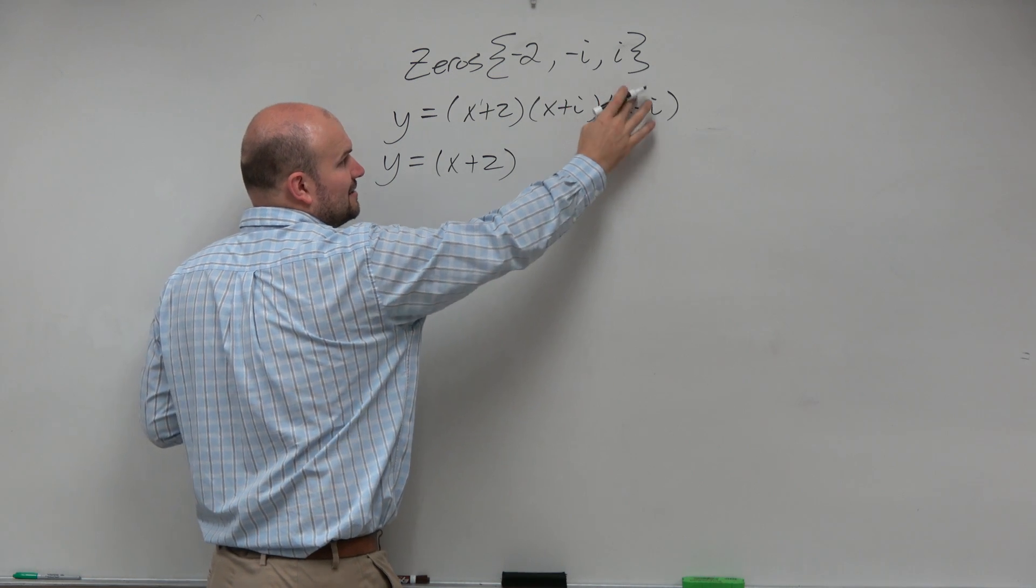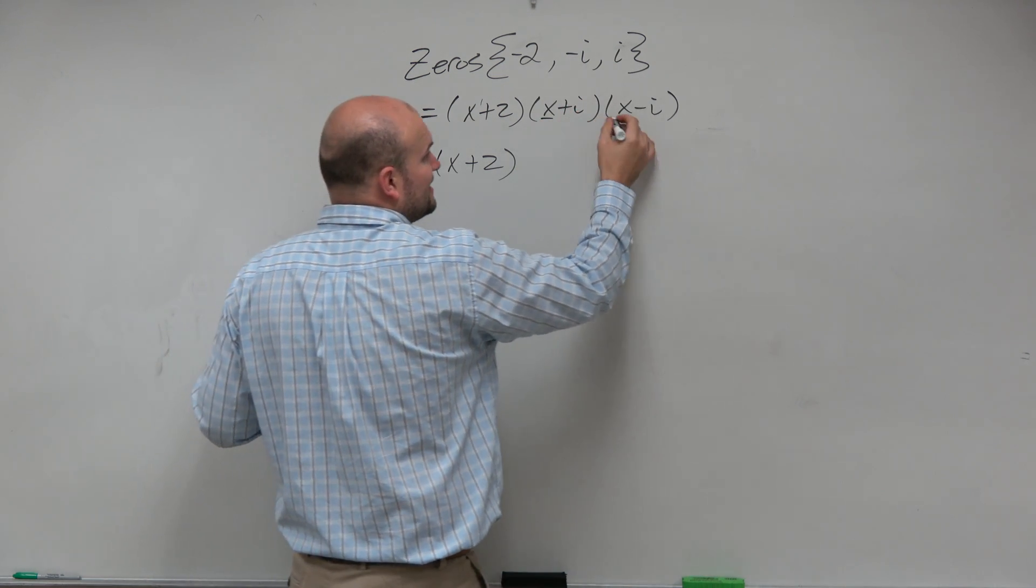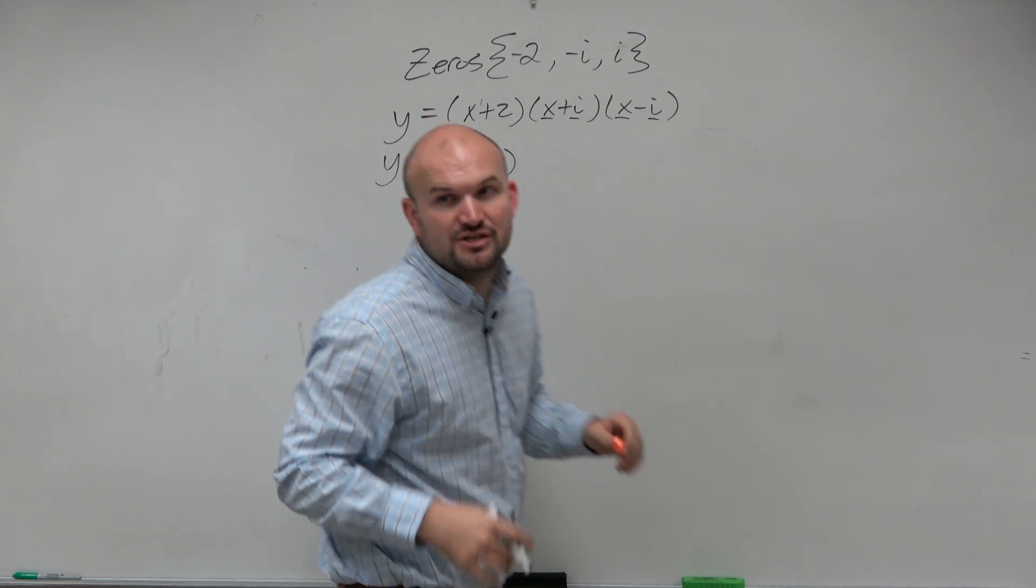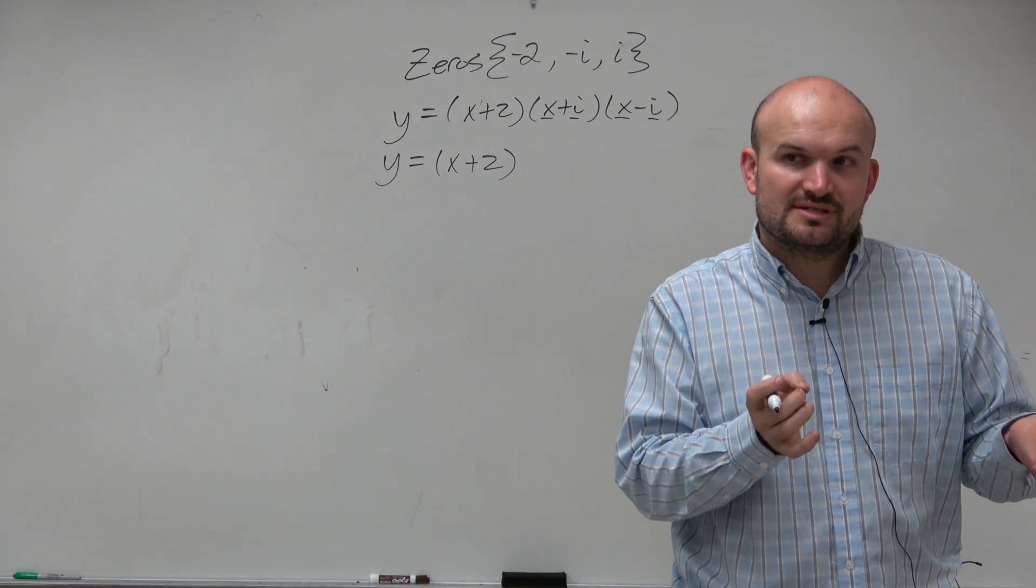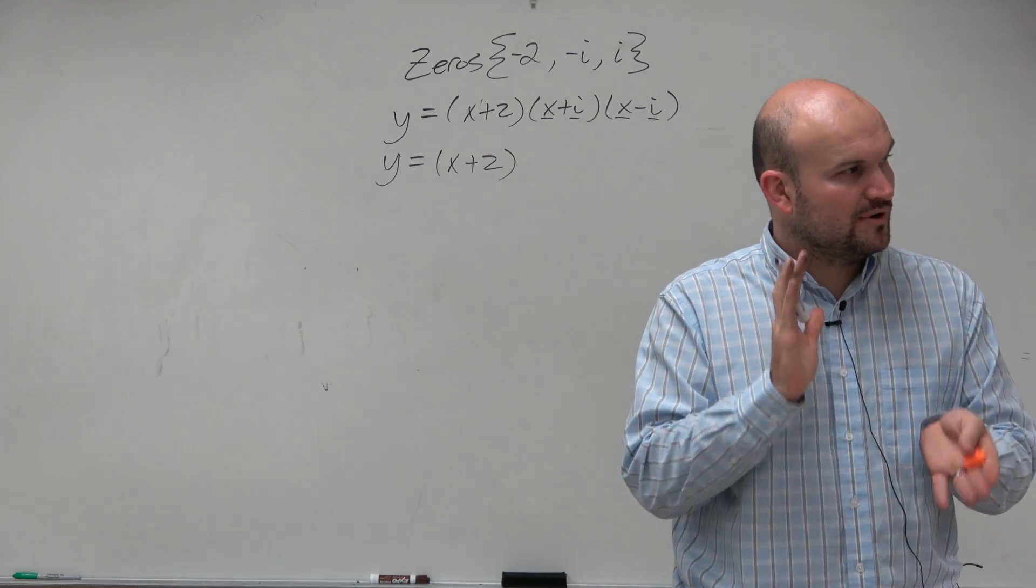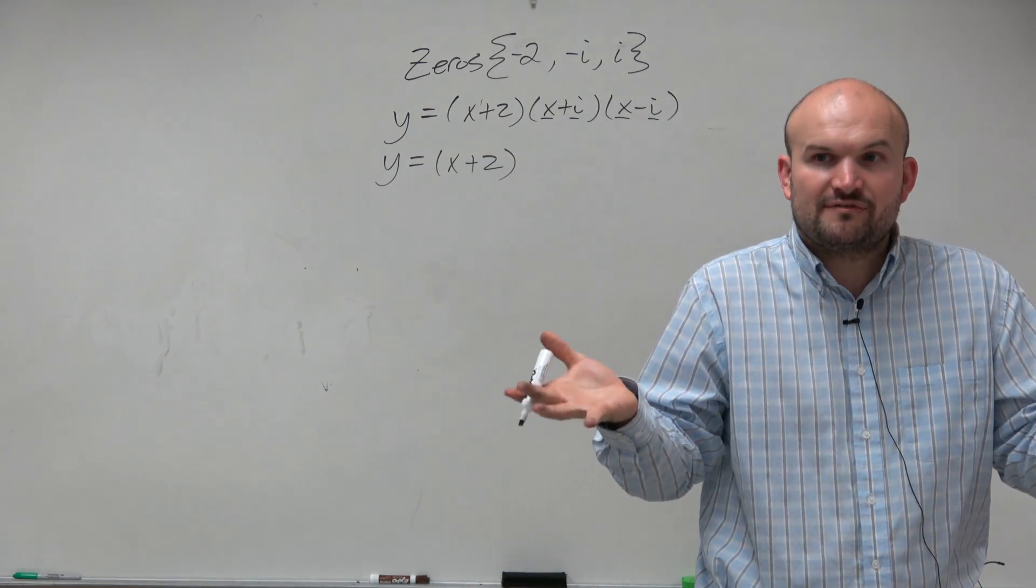So if we're multiplying this out, ladies and gentlemen, I notice that this is basically an expansion of difference of two squares. The first two terms are the same. The last two terms are the same. And the signs are alternating. One's negative, one's positive. So that's an expansion of difference of two squares.